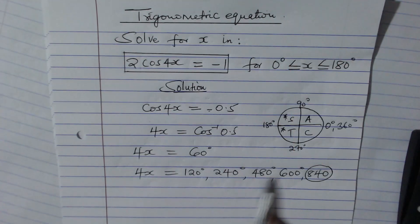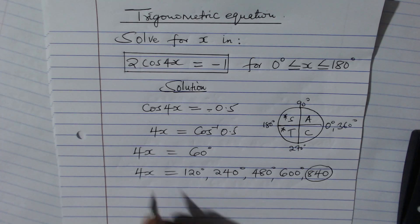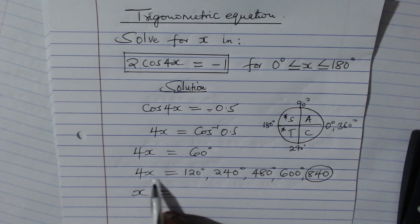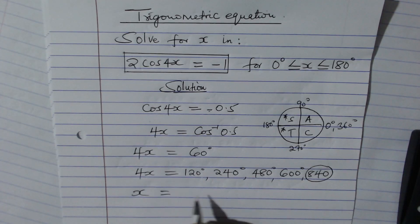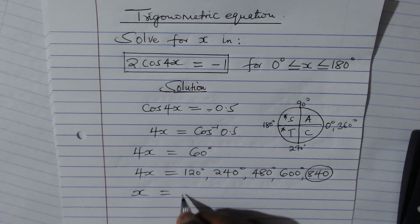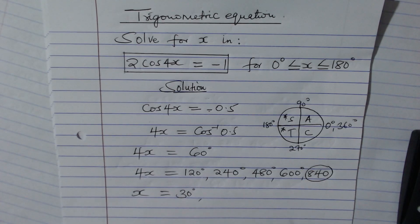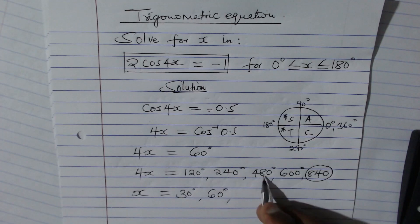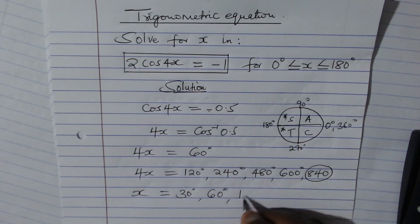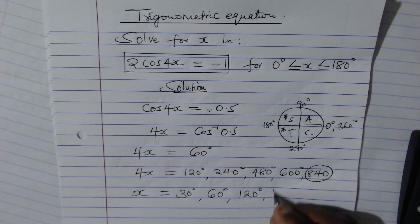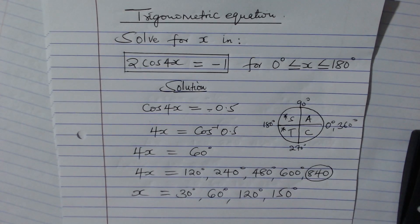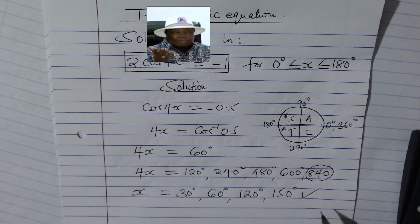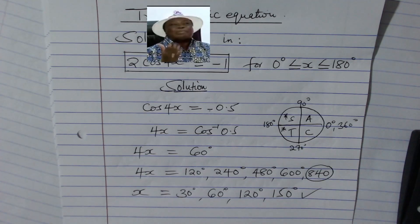So these are the angles. Now to get x, you need to divide all these angles by 4, because this is 4x. So 120 ÷ 4 you get 30 degrees, 240 ÷ 4 you get 60 degrees, then 480 ÷ 4 you get 120 degrees, and 150 degrees. And these are the required solutions for x.